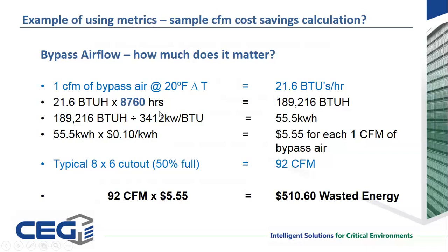When you do the math at 10 cents per kilowatt hour, that eight-by-six cutout that's only 50% full of cables is costing you $5.55 in efficiency. Multiply that out for the annual year — that's $510 just for one cutout. If you've got 100 of those things, this number becomes very meaningful. That's used when people are interested in the return on investment of deploying a mass quantity of floor grommets — you're going to see it on your electric bill. This is just another example of where metrics are used in the industry.